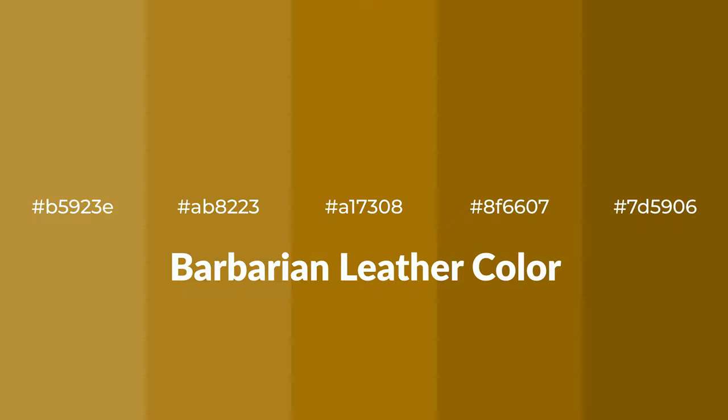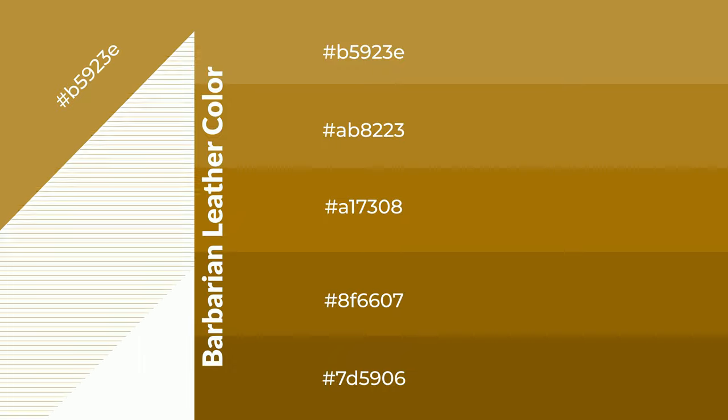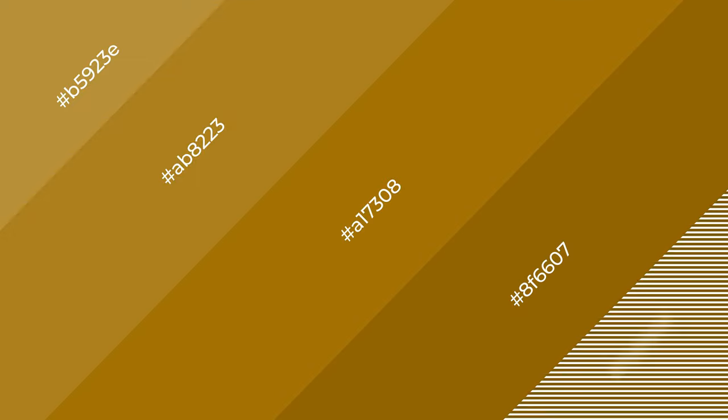Warm shades of barbarian leather color with a yellow hue for your next project. To generate tints of a color, we add white to the color — tints create light and exquisite emotions. To generate shades of a color, we add black to the color, and it is used in patterns, 3D effects, and layers. Shades create depth and drama.